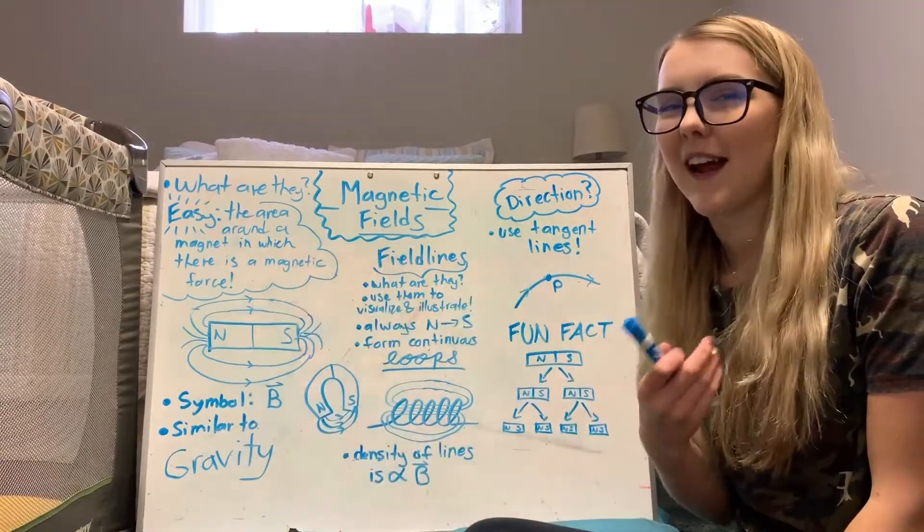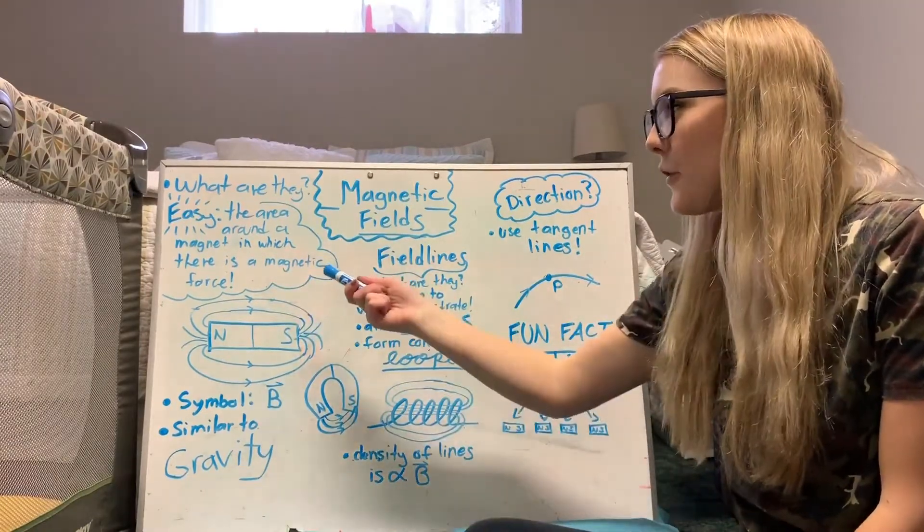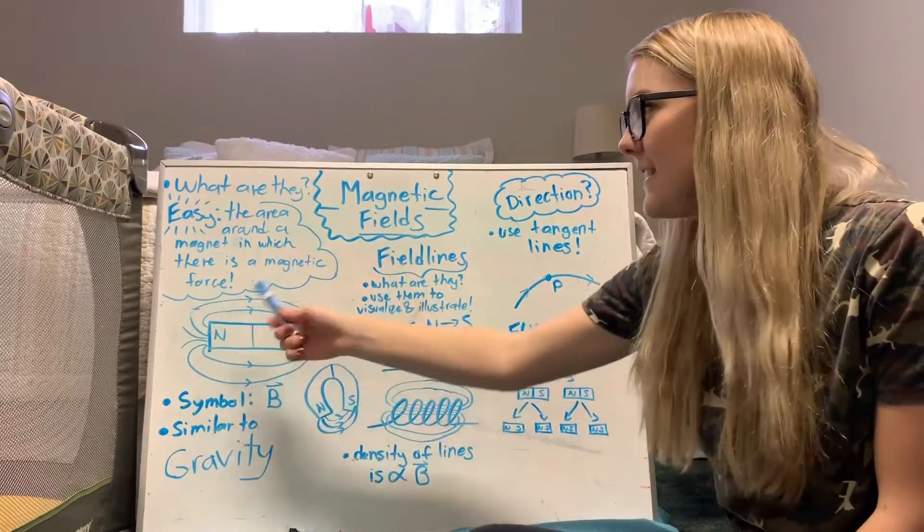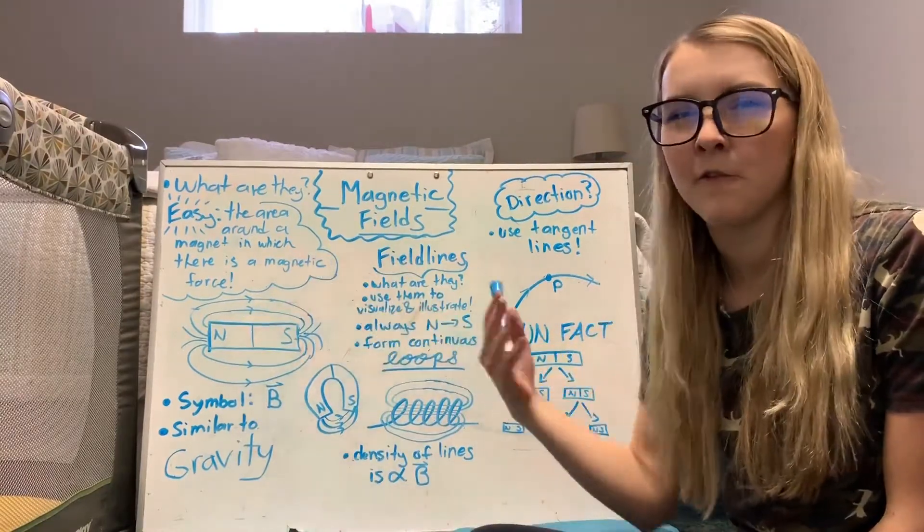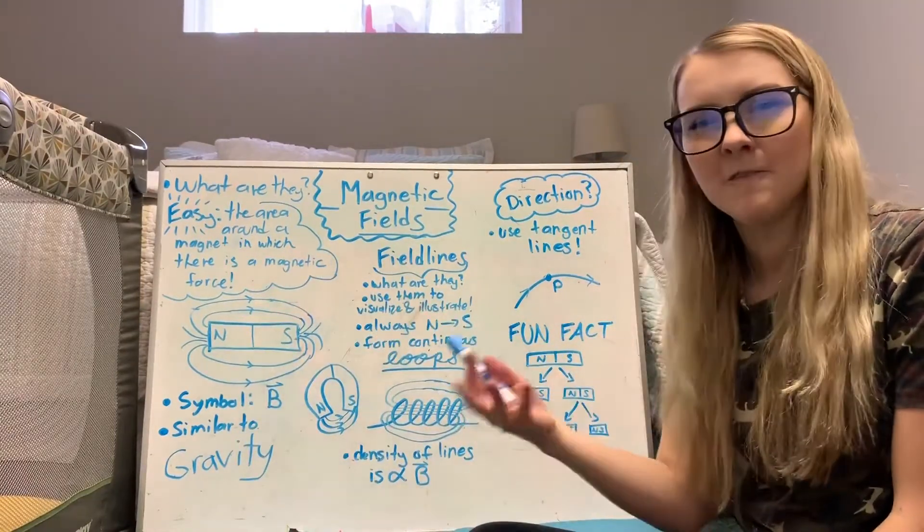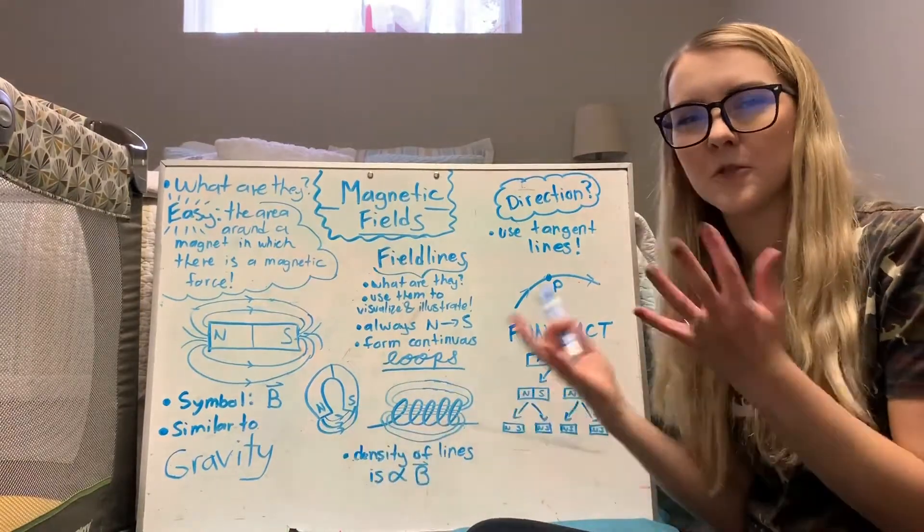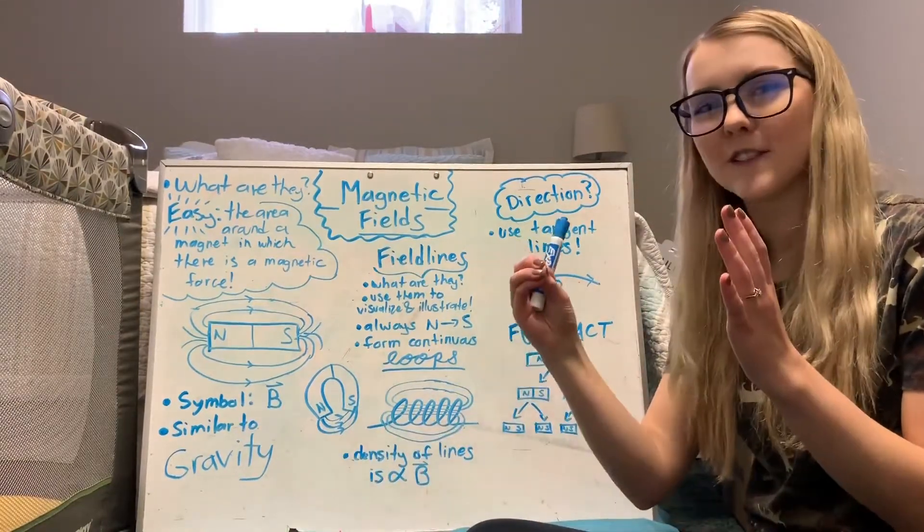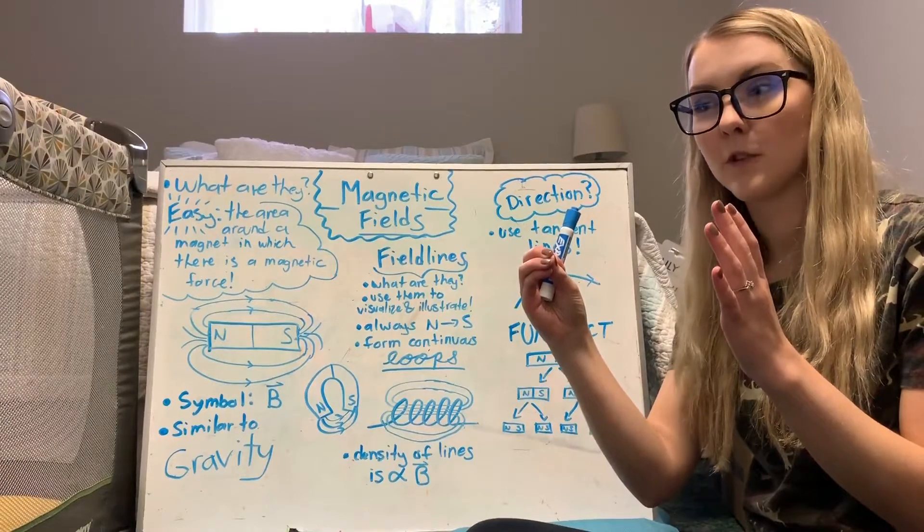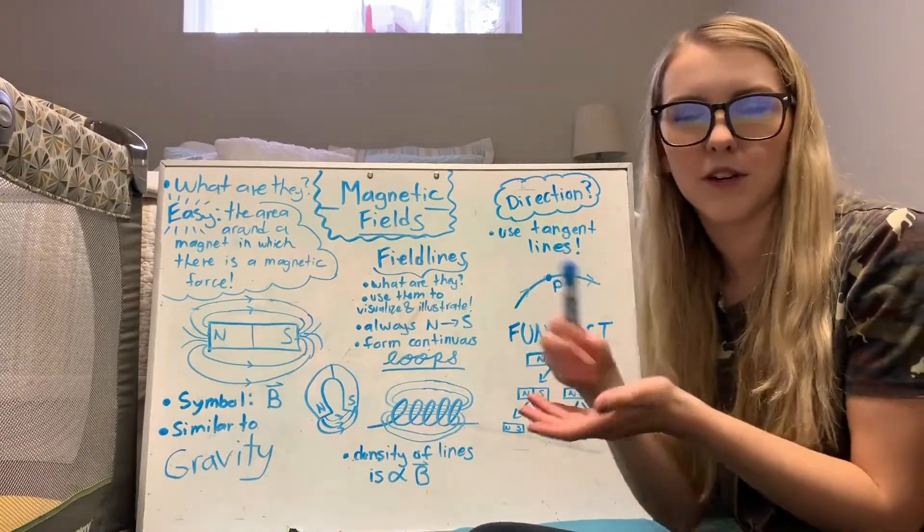Well the way that I like to think about it is it's the area around a magnet, just like this, in which there is a magnetic force. So they are invisible, it's very similar to gravity. So if you think about the earth's gravitational fields and if something enters that field, then the force of gravity works on that object, whatever that object is.